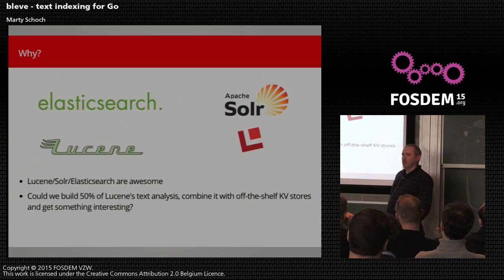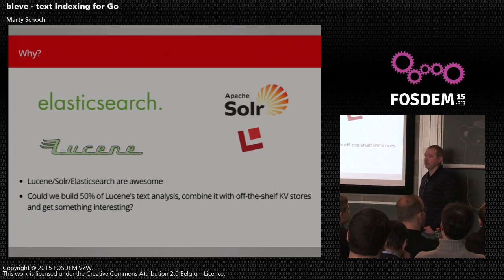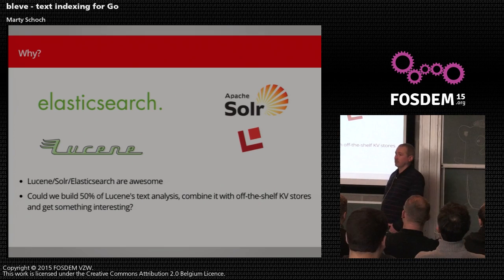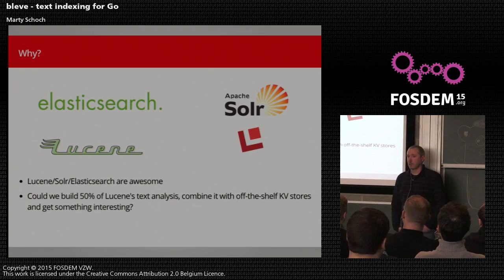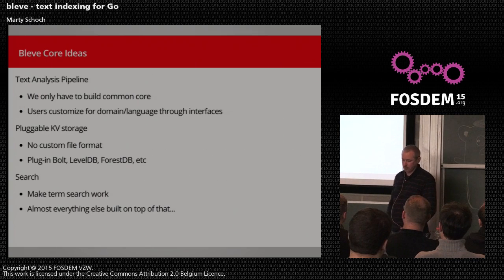But sometimes you don't already have a JVM in your architecture, and adding that to your architecture is maybe a more heavyweight thing than you're interested in doing. So we really started asking ourselves the question: could we build 50% of Lucene's text analysis, pair that with some off-the-shelf KV stores, and maybe something interesting comes out of that? That's really the experiment we pursued.